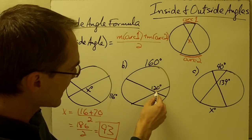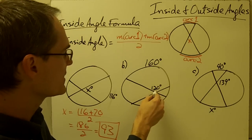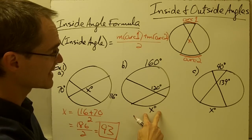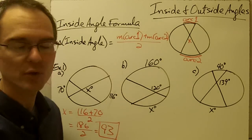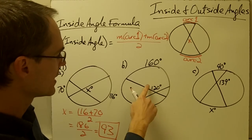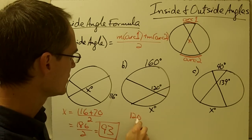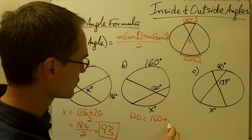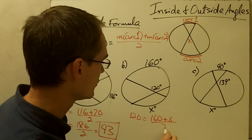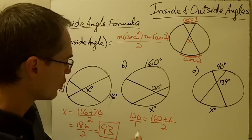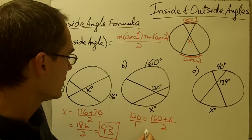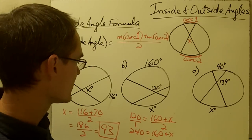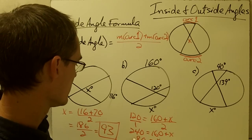Example 1b: again I have another inside angle, two chords intersecting inside a circle, so the measure of this angle is going to be the measure of this arc plus the measure of this arc divided by 2. The difference here is that I'm looking for the measure of one of the arcs, not the angle itself. My inside angle is 120, so: 120 equals 160 plus x, divided by 2. Cross-multiplying: 2 times 120 is 240, and that equals 160 plus x. Subtracting 160 from both sides gives x equals 80.